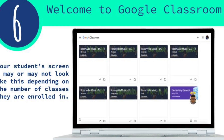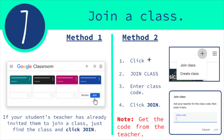Step six. Welcome to Google Classroom. Step seven: Join a class. There are two methods to joining classes on Google Classroom. Let's begin with method one. The Google Classroom screen will look just like this. If your student's teacher has already invited them to join a class, just find the class and click Join. Now for method two — this is for those students who have not been invited to the class on Google Classroom just yet.